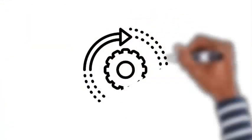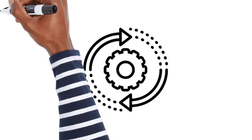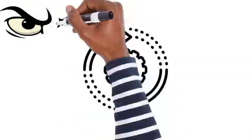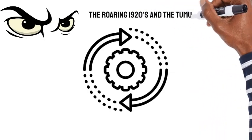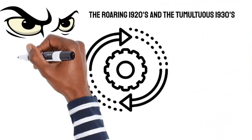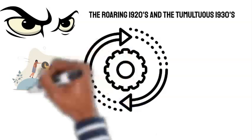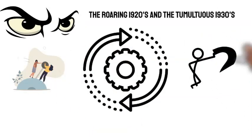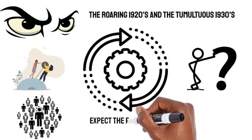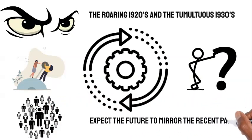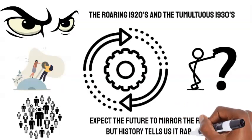Historically, we've witnessed transitions that no one saw coming. Take, for instance, the stark difference between the roaring 1920s and the tumultuous 1930s. This abrupt shift caught many off guard. Why? It's because more often than not, society has a tendency to expect the future to mirror the recent past. But history tells us it rarely does.